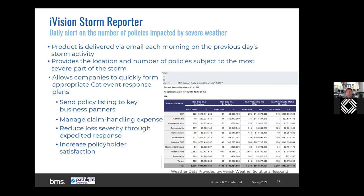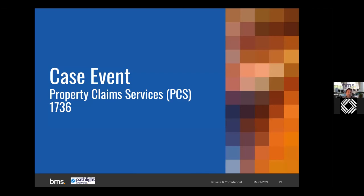The question is how do we add value beyond the hail report itself? Let's put it all together with a case study before talking about adding value through claims and damage ratios.